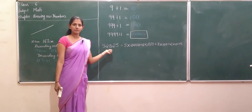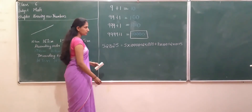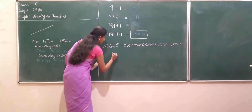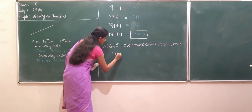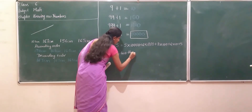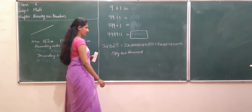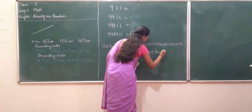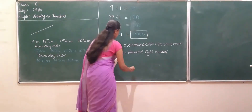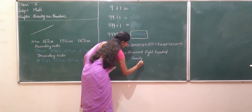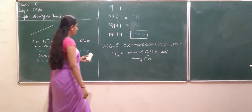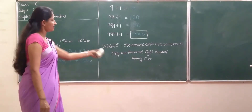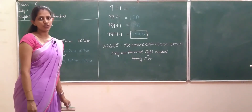How do you write 52,825 as a number name? Can you write it? 52,825 — write it out as fifty-two thousand eight hundred and twenty-five. Correct. We introduced 10,000 here.